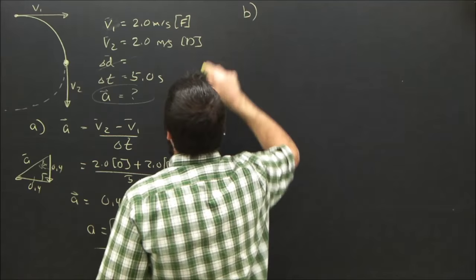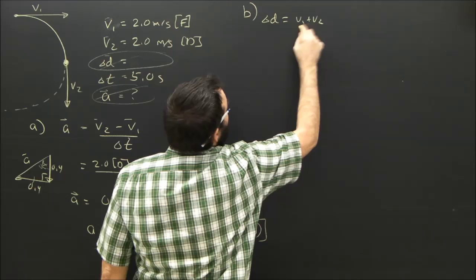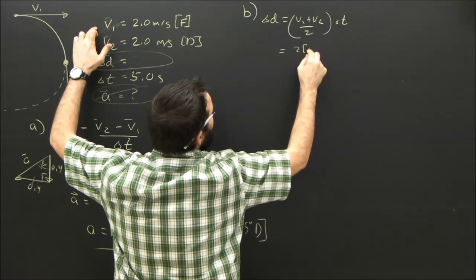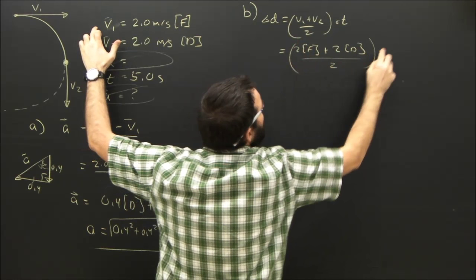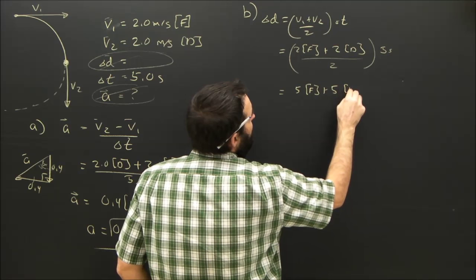We'll come back to this in a second. Part B asks us to find the displacement. So now we don't know the acceleration, and we would be tempted to simply say the displacement equals V1 plus V2 over 2 times time and sub in. So this would be 2 forward plus 2 down over 2 times 5, which is times 2.5. 2.5 times 2 is 5 again. So 5 forward plus 5 down.